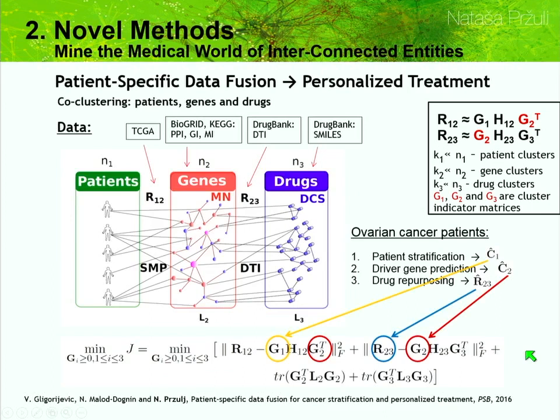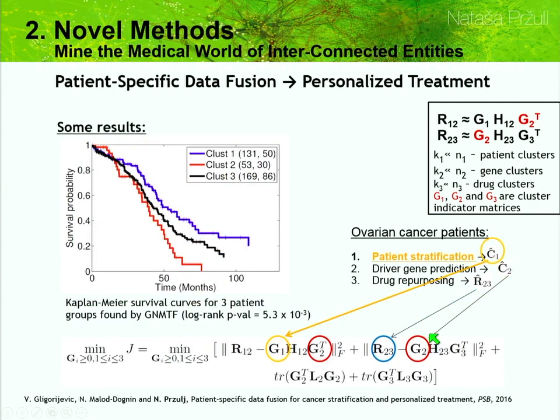At the same time from this framework, we obtain clusters of patients for patient stratification, drug repurposing predictions from the R23 matrix, and driver gene predictions from clusters of genes enriched with driver genes through fusion of all the data. This works because, as we all know, cancer is very heterogeneous: different patients of the same cancer have different mutations, but these mutations usually lie on the same or similar functional pathways.